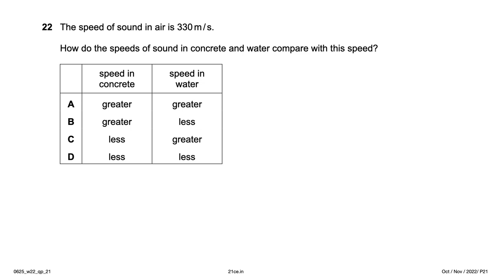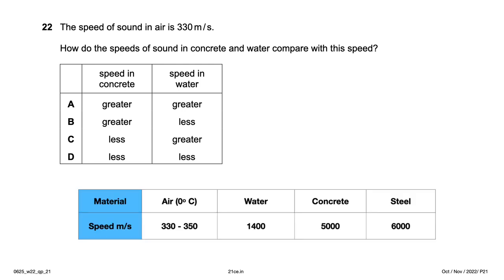The speed of sound in air is 330 m/s. How do the speeds of sound in concrete and water compare? Sound travels slowest in air because air molecules are not packed tightly. It travels faster in water and faster still in concrete — the more tightly packed the material, the faster the sound. Speed in concrete > speed in water > speed in air, so option A.